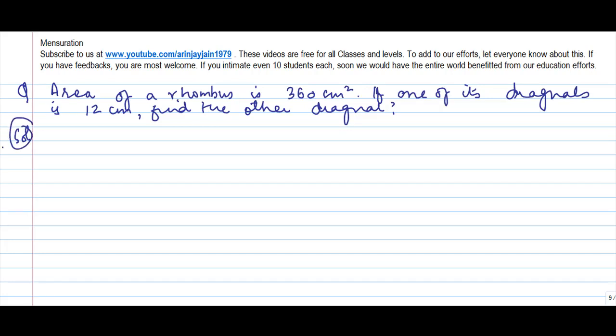Okay, now we know that area of a rhombus is equal to one half of diagonal one into diagonal two.